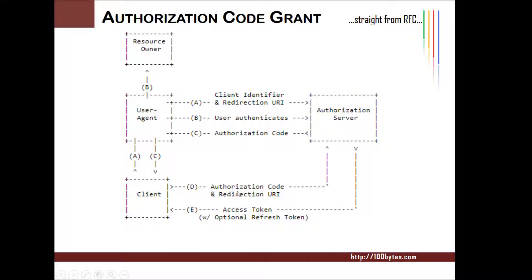Once the authorization code is received, the client again will send that authorization code along with one more redirection URI. That is the redirection URI where the authorization server gives back the access token and optional refresh token. The authorization server validates the authorization code, and once everything is verified, it will return the access token along with the redirection URI specified in the request.